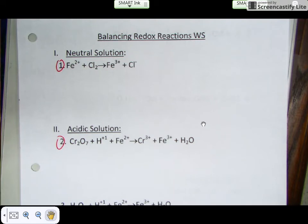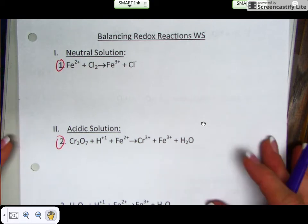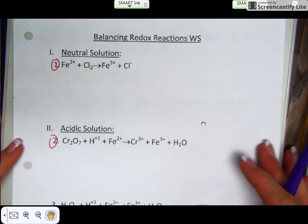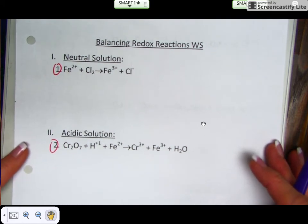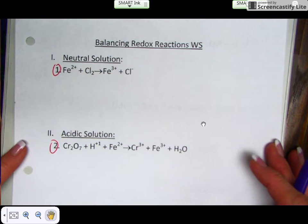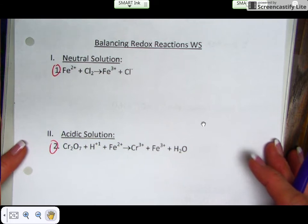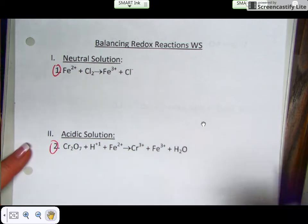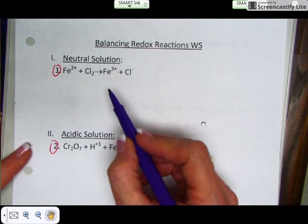So today we took notes on how to balance a redox reaction. I'd like to go through a couple of examples on your balancing redox worksheet just to review and give you a few more examples to go by. The first thing that you have to do, we said, was to separate your half reactions.